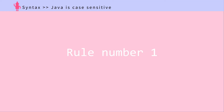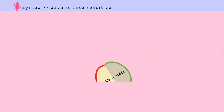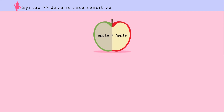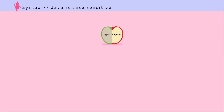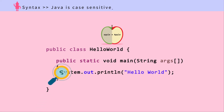Rule number one: Java is case sensitive. This means that uppercase "Apple" is not the same as lowercase "apple". System.out.println("Hello World") written with a lowercase 's' doesn't work — uppercase it.